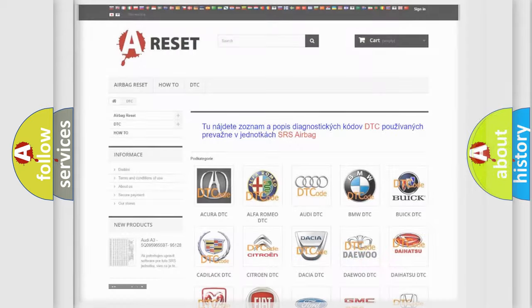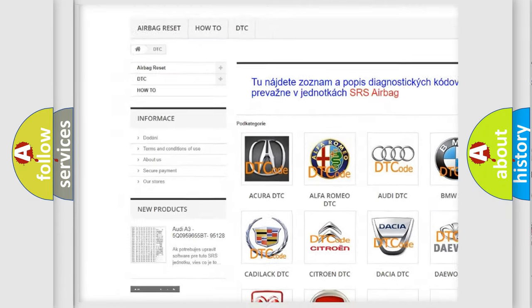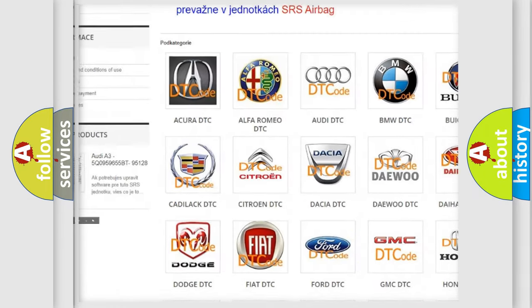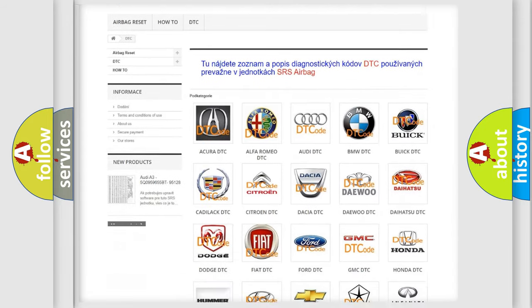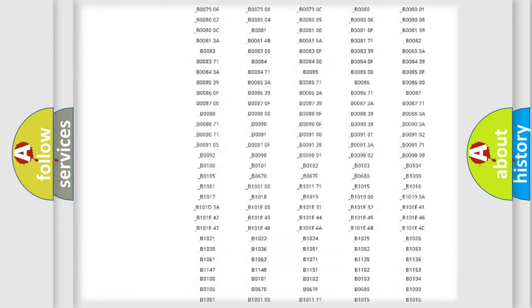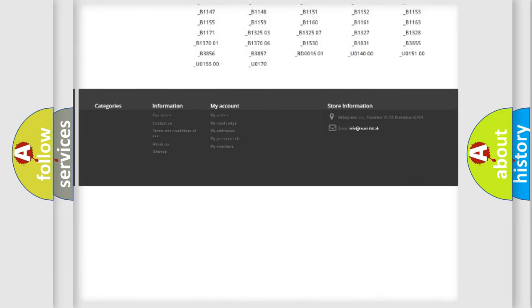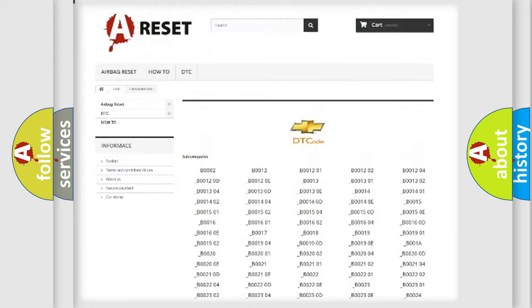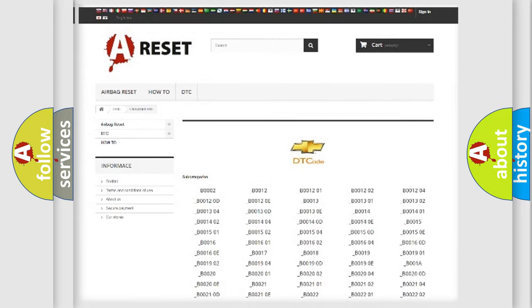Our website airbagreset.sk produces useful videos for you. You do not have to go through the OBD2 protocol anymore to know how to troubleshoot any car breakdown. You will find all the diagnostic codes that can be diagnosed in Chevrolet vehicles, and many other useful things.